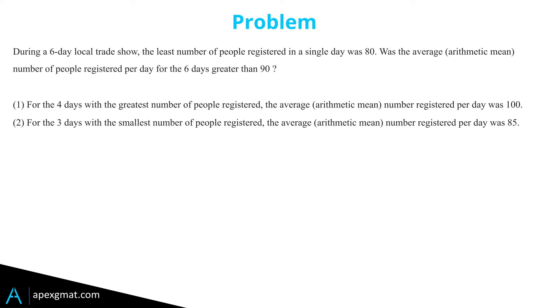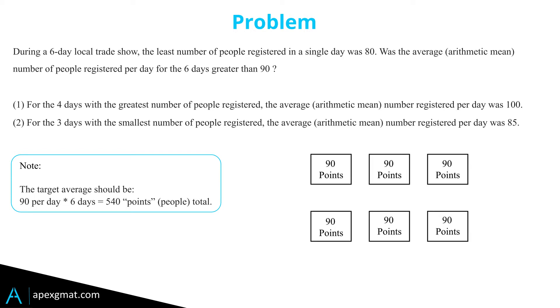We're being asked whether or not it gets above a certain threshold, an average of 90 over six days, which is a total of 540 points. Notice how I did it mathematically—you can represent it graphically as a rectangle, but 90 times 6 is 540 points.